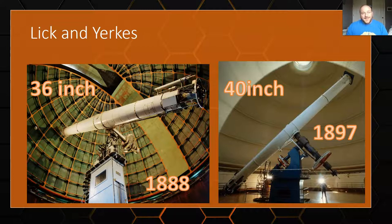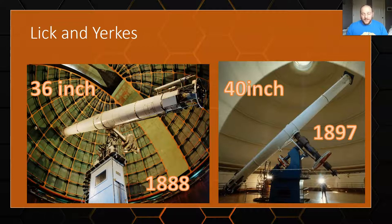The largest refractor still existing in the world is Yerkes in Wisconsin, a little bit larger than Lick and built a little bit after it, but it is no longer in operation. Lick is the still-functioning observatory — you can go visit it and they have tours. Both scopes were built in the 1800s, and it's not like astronomy stopped then. The thing is we changed from refractors to reflectors, because of three primary problems with refractors.